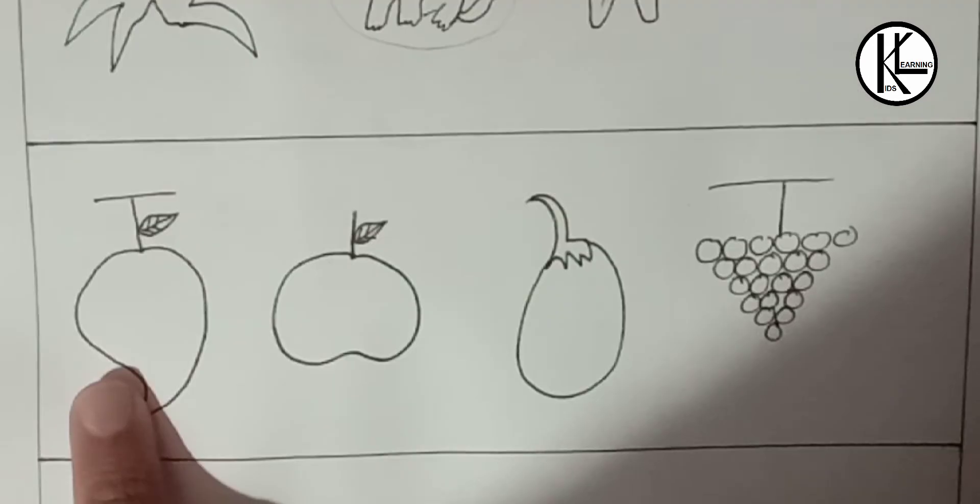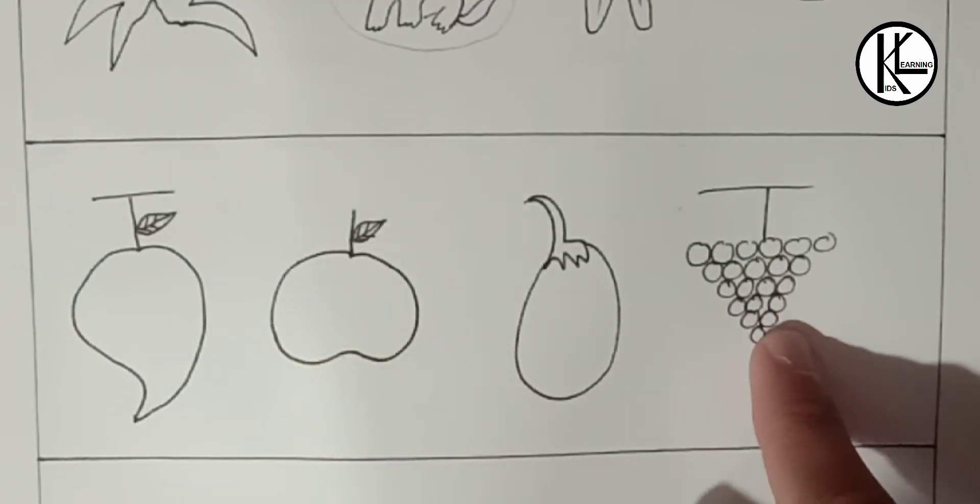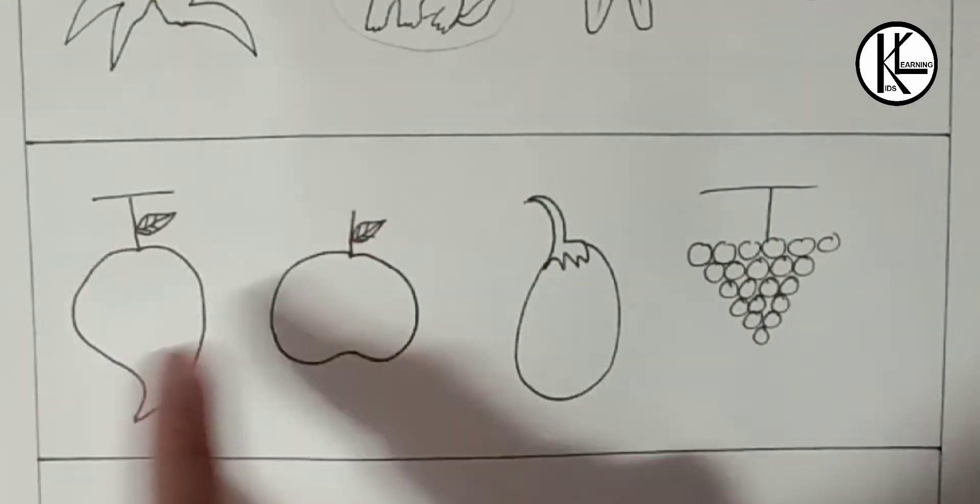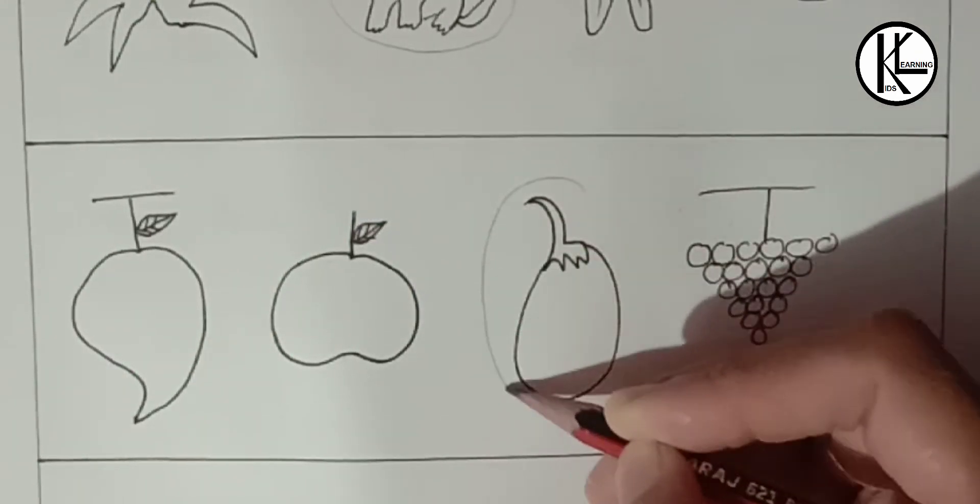On third: mango, apple, this is a brinjal, and grapes. Obviously these three belong to a fruit family and this is a vegetable. So kids have to circle this.